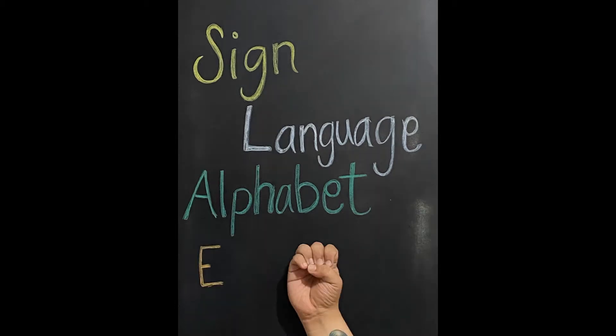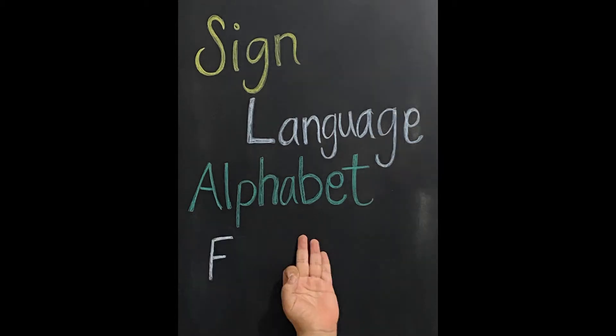E is all your fingers on top of your thumb while making a fist. F is making a circle with your thumb and your index finger, and having your other three fingers separated and pointing up.